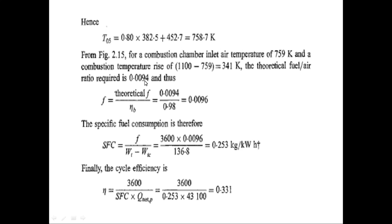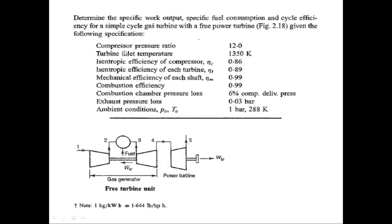In theory it is less, and in practice it must be slightly higher. The specific fuel consumption is the actual fuel-air ratio divided by the specific work output: 3600 times 0.0096 divided by 137, which gives an SFC of approximately 0.253 kg/kWh. The cycle thermal efficiency is 3600 divided by (SFC times Q_net), coming out to 33 percent.